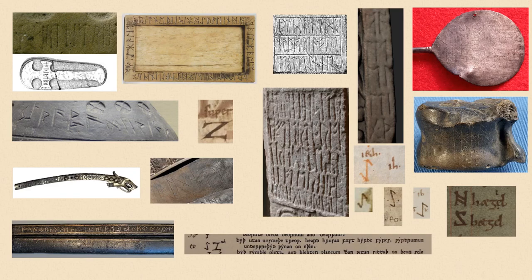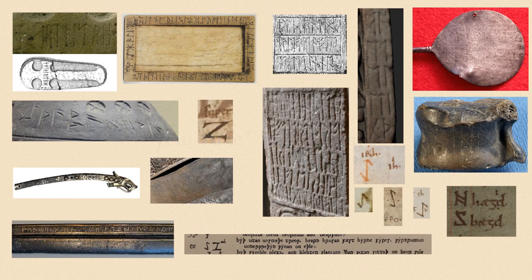In this video, I'm going to talk about the Yr-Rune in the context of Futhorc. This rune has not been found in any Frisian inscriptions, so all of these examples are going to be English, with the possible exception of this one here. This was found in England, but it might be Elder Futhark.